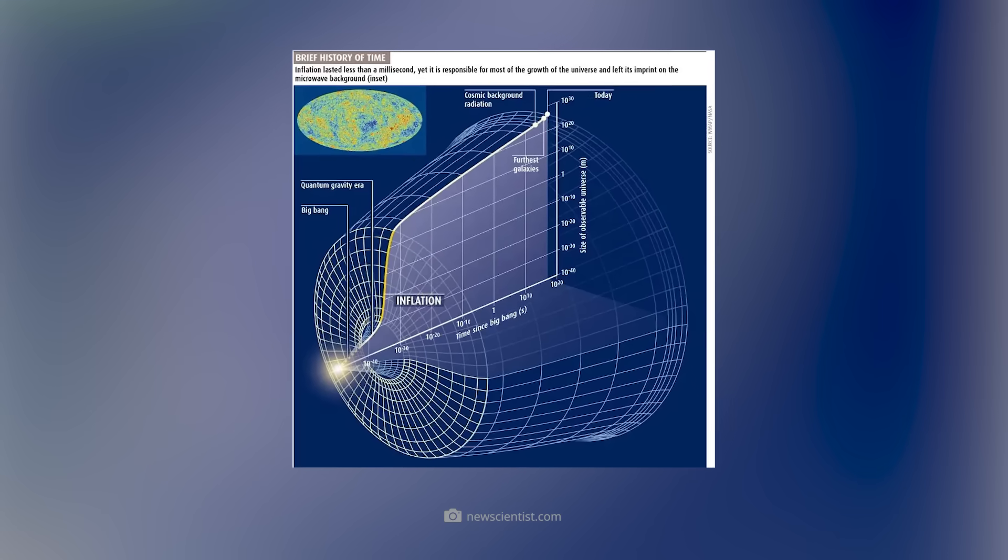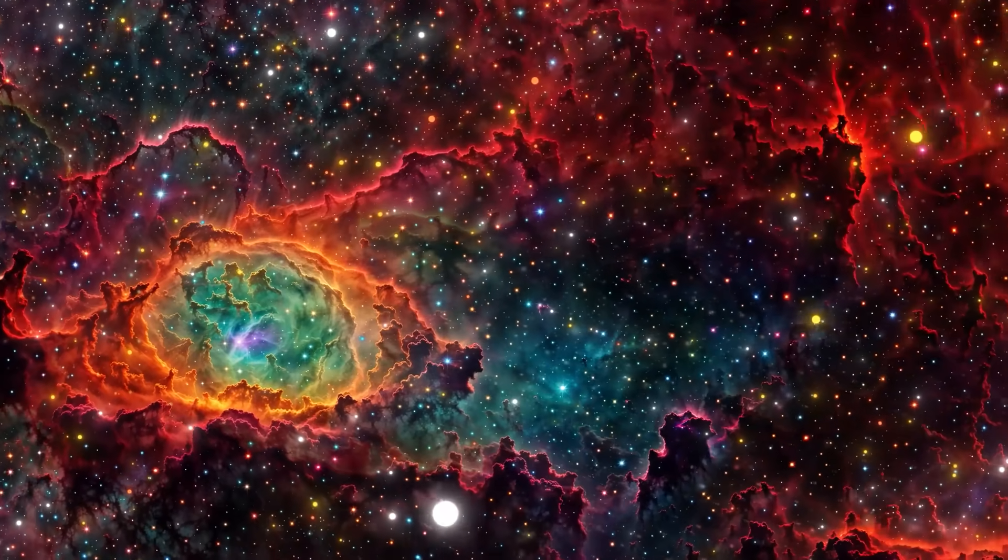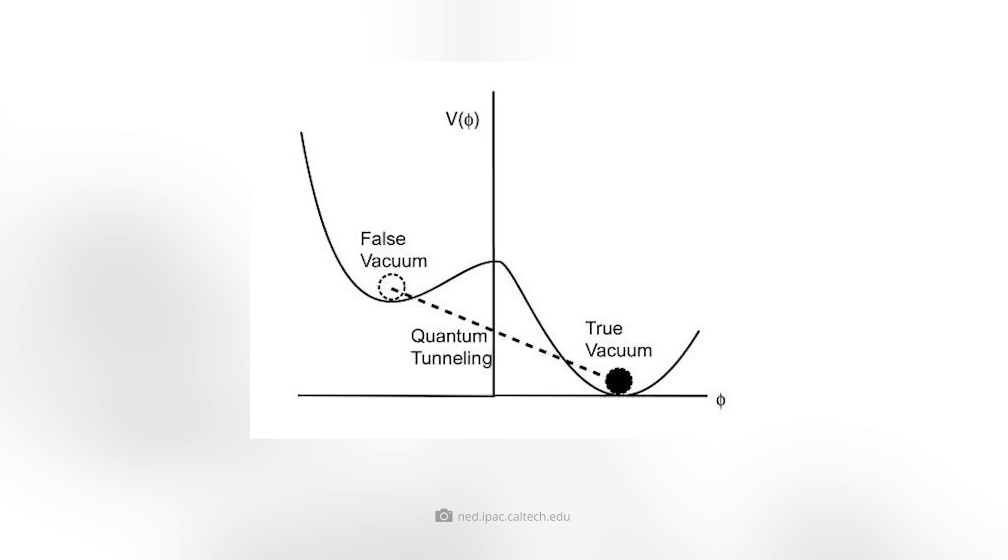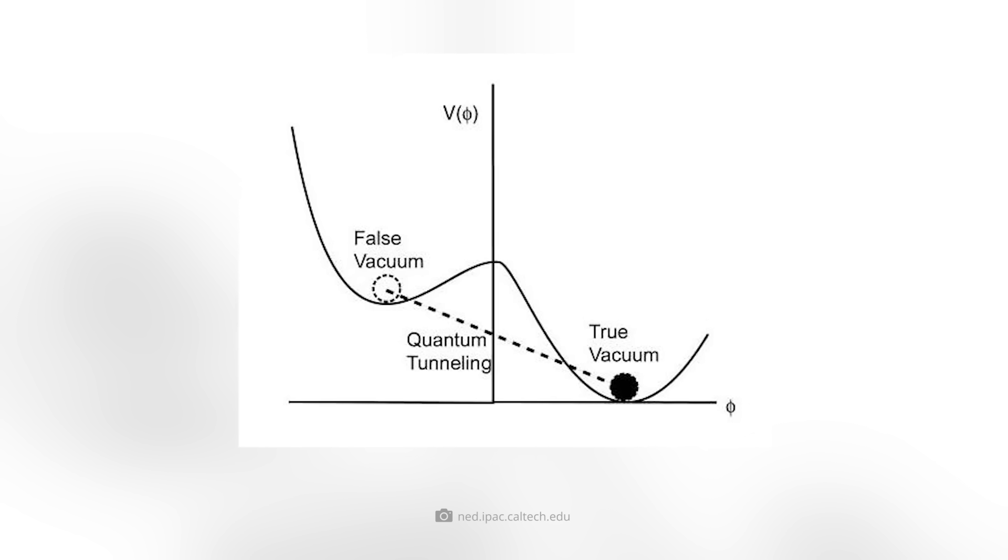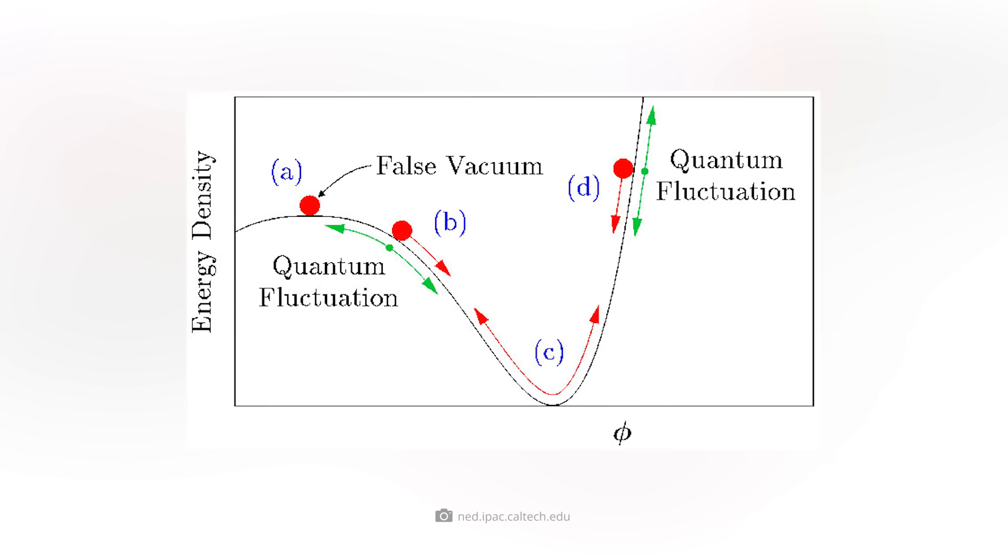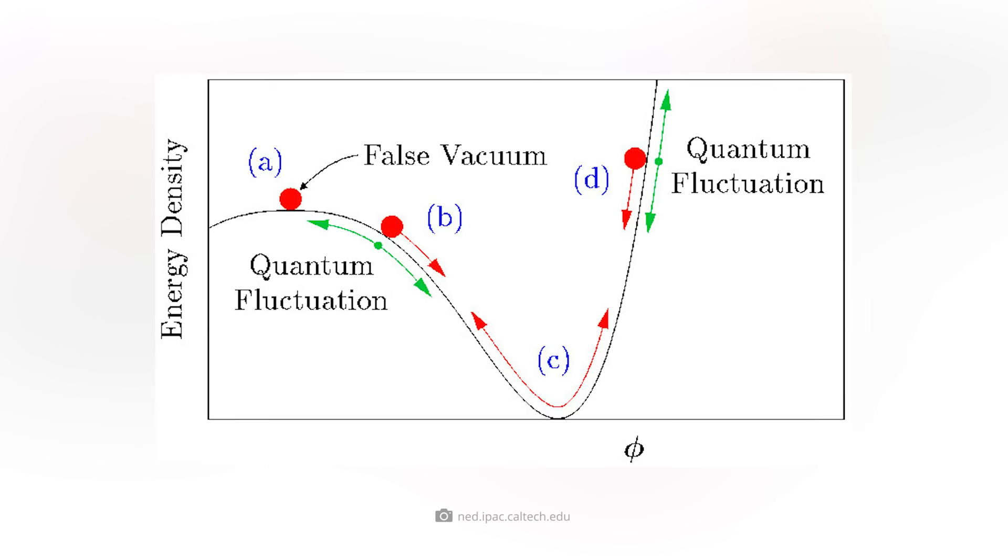Depending on its state, this causes the cosmos to expand, stagnate, or expand at unimaginable speeds. And assuming that the inflaton field was in a false vacuum shortly after the Big Bang, random quantum fluctuations, or in other words, tiny random fluctuations in the values of the elementary particle fields, could have caused it to change into a true vacuum or into another false vacuum with lower energy.